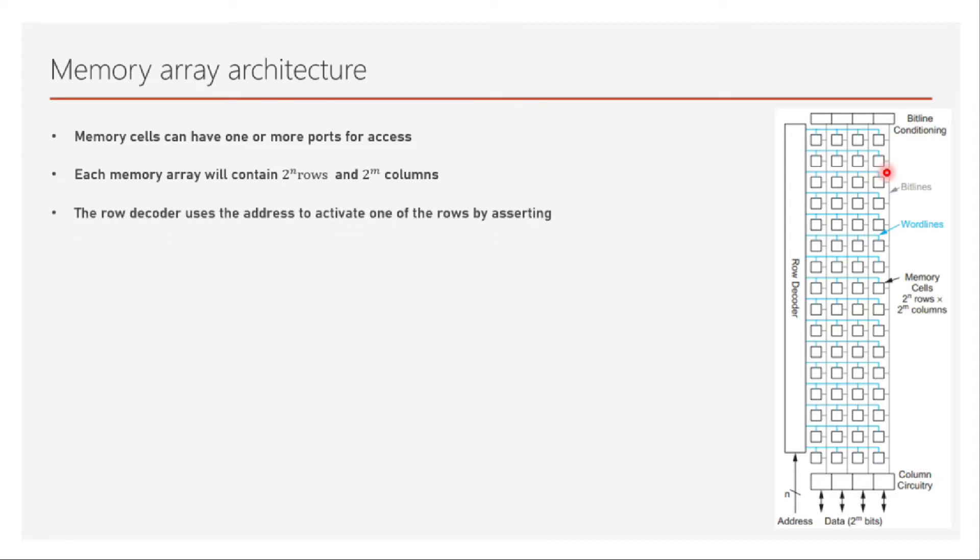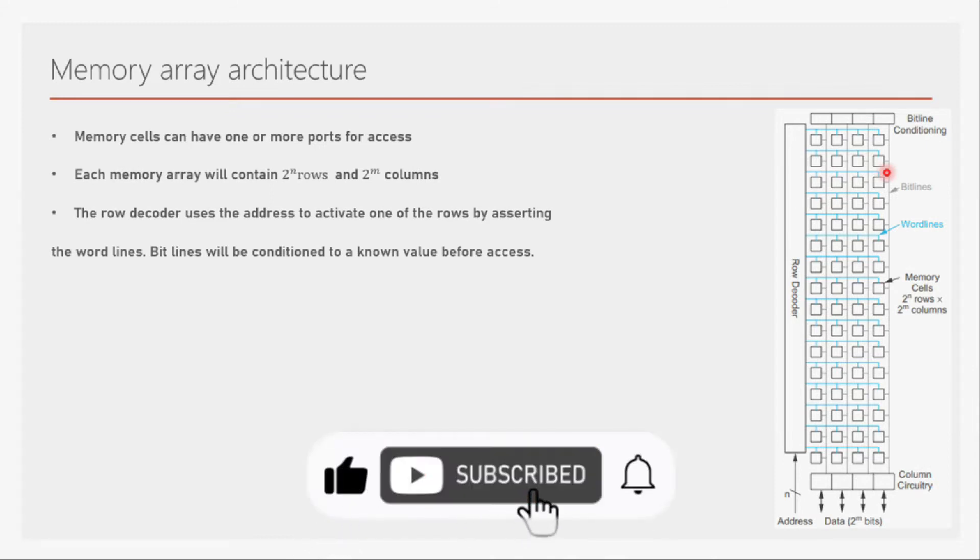The row decoder uses the address to activate one of the rows by asserting the word lines. Bit lines will be conditioned to a known value before access. Bit line conditioning is nothing but to make the bits proper values. It is like an evaluation of the bits so that the memory is properly evaluated. So what is the job of row decoder? It will take the input as address and it will select one of these rows by asserting the word line over here. This is called as a word line and this entire row is a word. So here as you can see it is a 4-bit word.